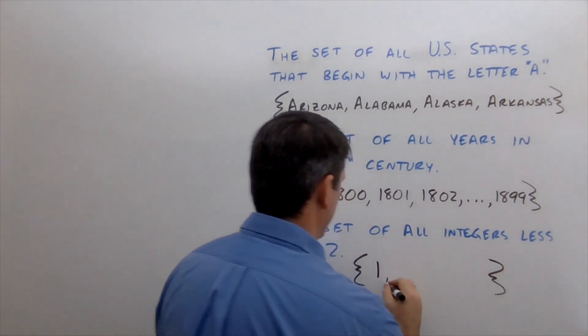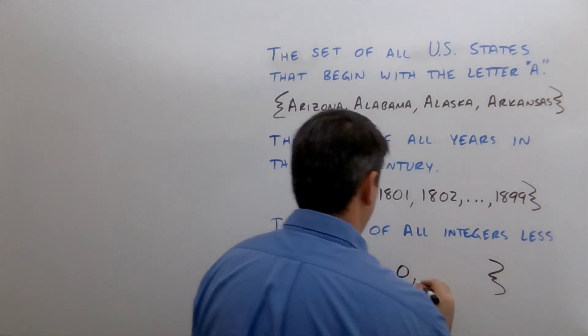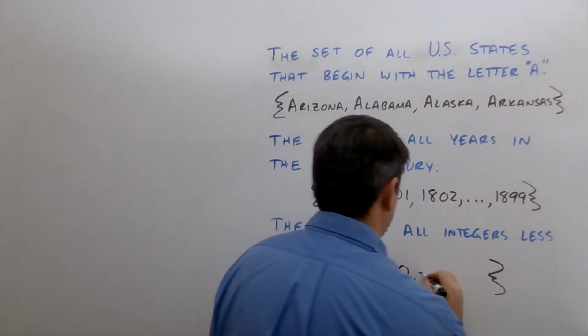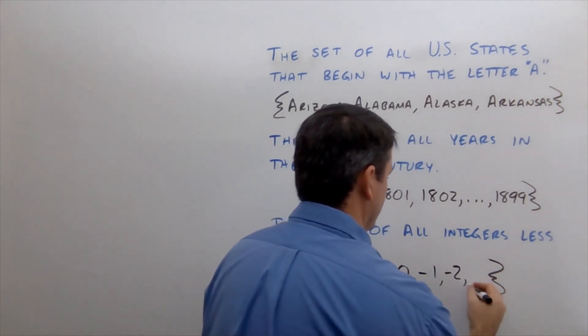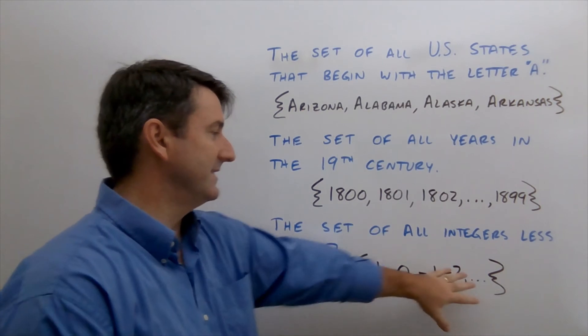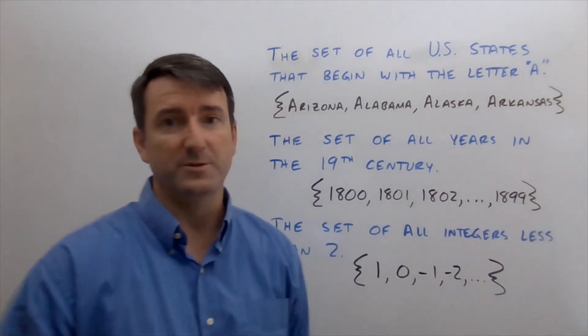So we could write one and then the next one would be zero and then negative one and then negative two and then dot, dot, dot. Put that ellipsis at the end, meaning this continues forever.